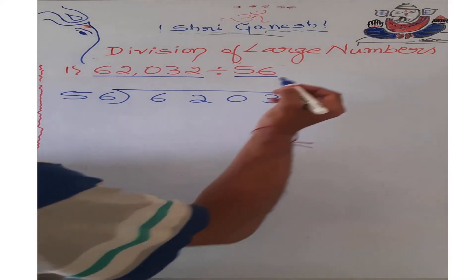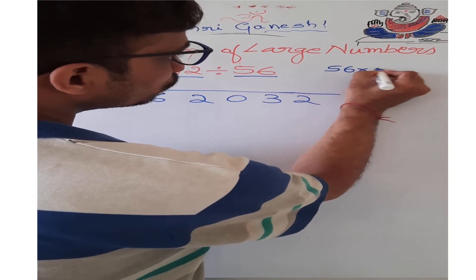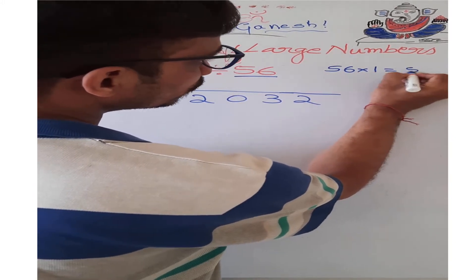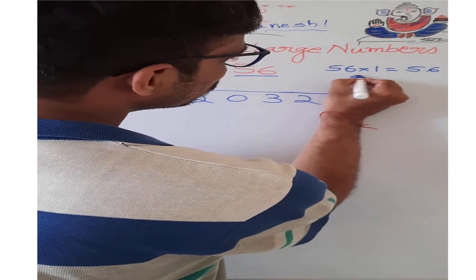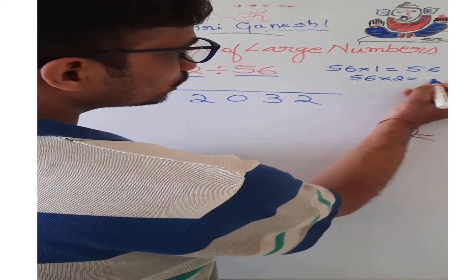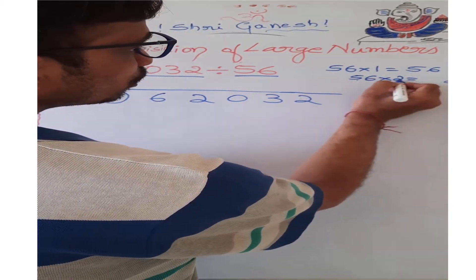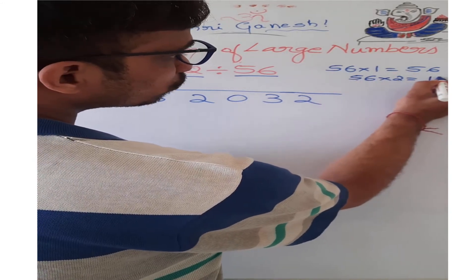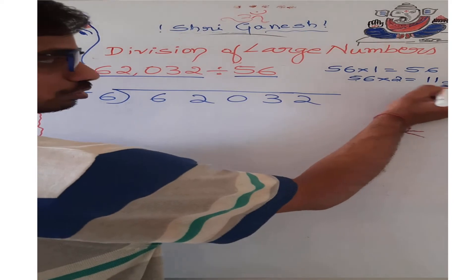Now we have the tables of 56. 56 into 1: 56. 56 into 2: 2 into 6 is 12, 2 here, 1 carry. 2 into 5 is 10, 10 plus 1 is 11. We got the product as 112.